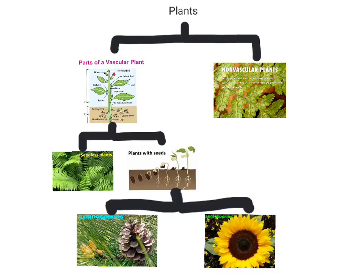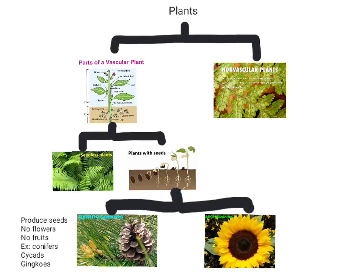Gymnosperms are some of the oldest plants on earth. They are vascular plants that produce seeds, usually on the scales of a cone — there is no flower and no fruit that will eventually surround the seed. Conifers, cycads, and ginkgos are the three main groups of gymnosperms. These include trees such as pine, fir, and spruce. Because of the need for building lumber, gymnosperms are very important to our economy.